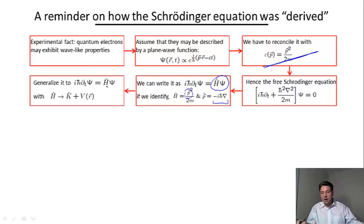The last step in deriving the Schrödinger equation was to generalize this energy operator, the Hamiltonian, from being the free energy operator p² over 2m to kinetic energy plus potential energy.